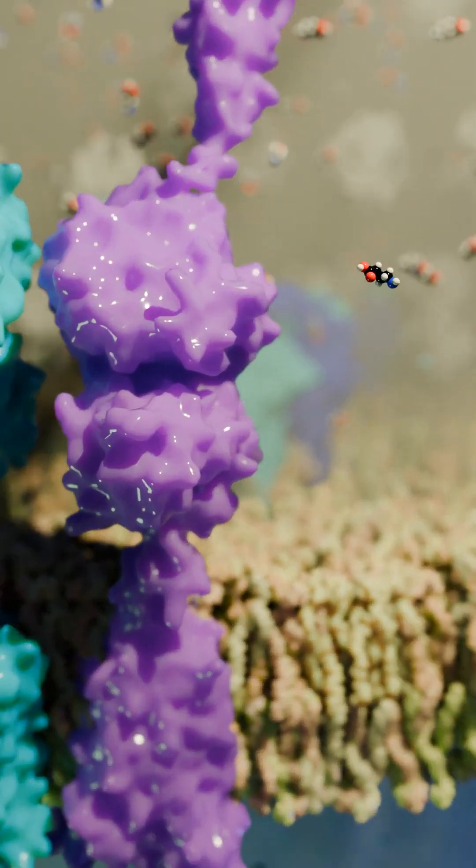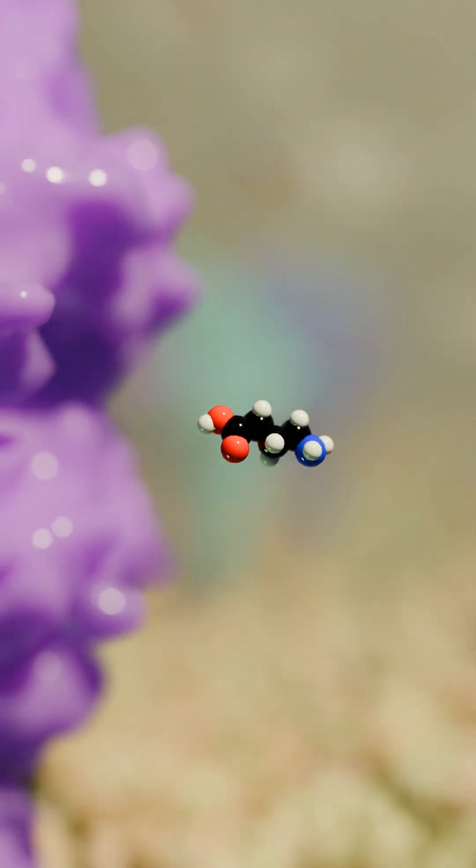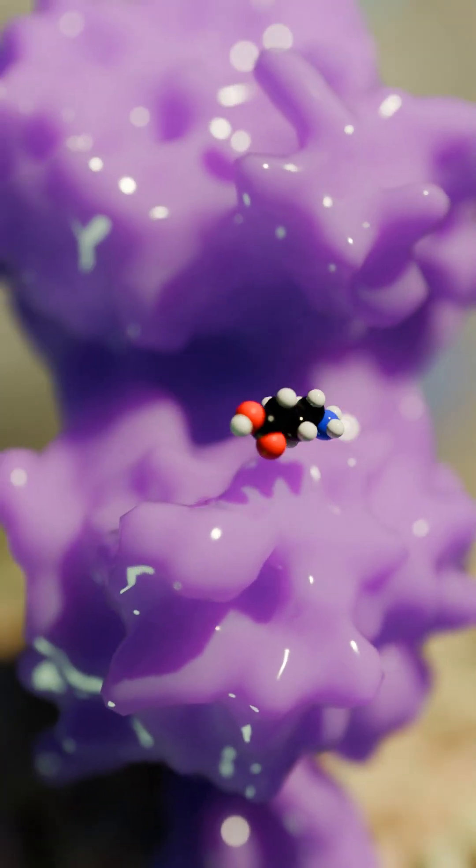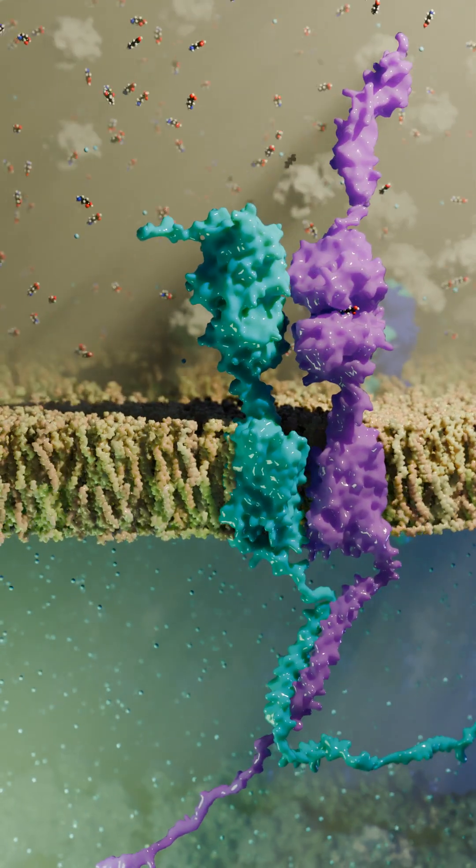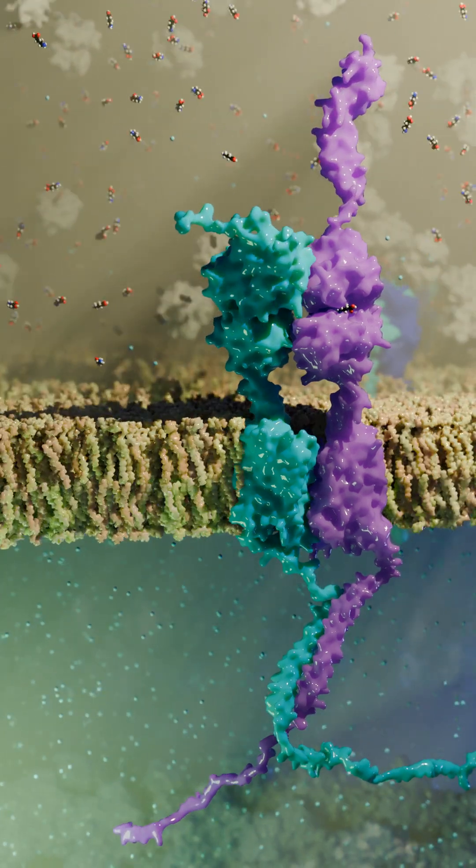When the neurotransmitter GABA floods the synaptic cleft, GABA can bind to the binding pocket of subunit 1. This changes the conformation of both subunit 1 and 2.